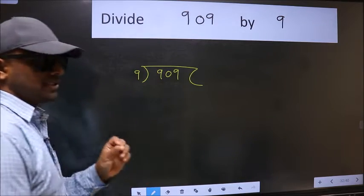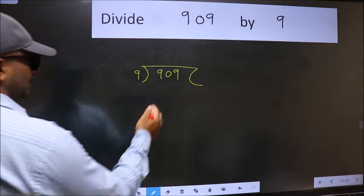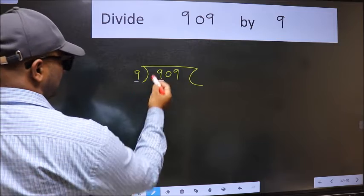This is your step 1. Next, here we have 9 and here 9. When do we get 9 in 9 table?